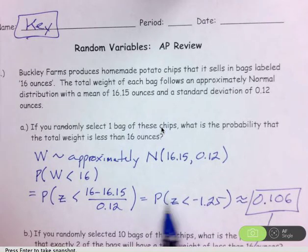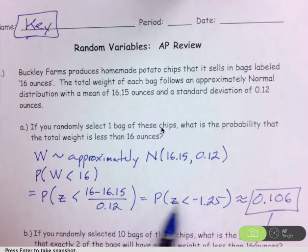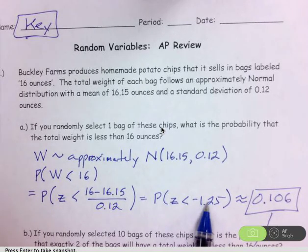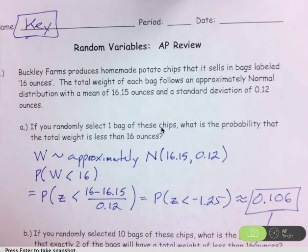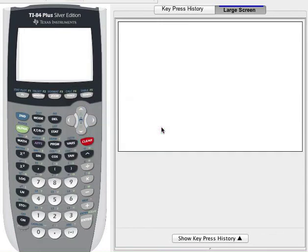But then I want the probability. I want all of the area under the normal density function that's less than negative 1.25. That is my upper boundary. So the lower boundary that you would want to use in the normal cdf command or in the shade norm command would be negative 10. That would be sufficient here.